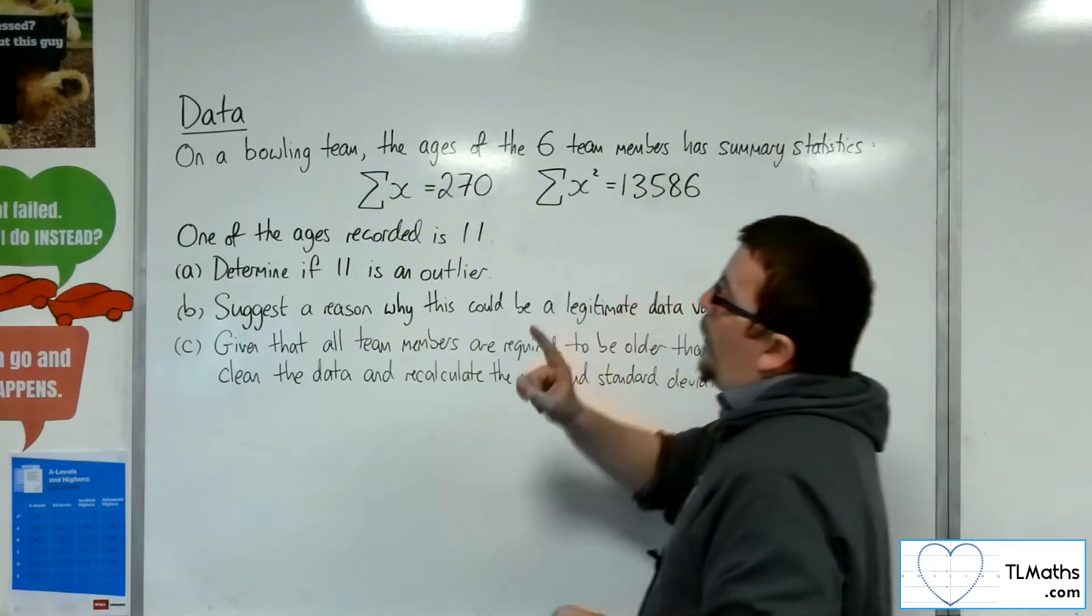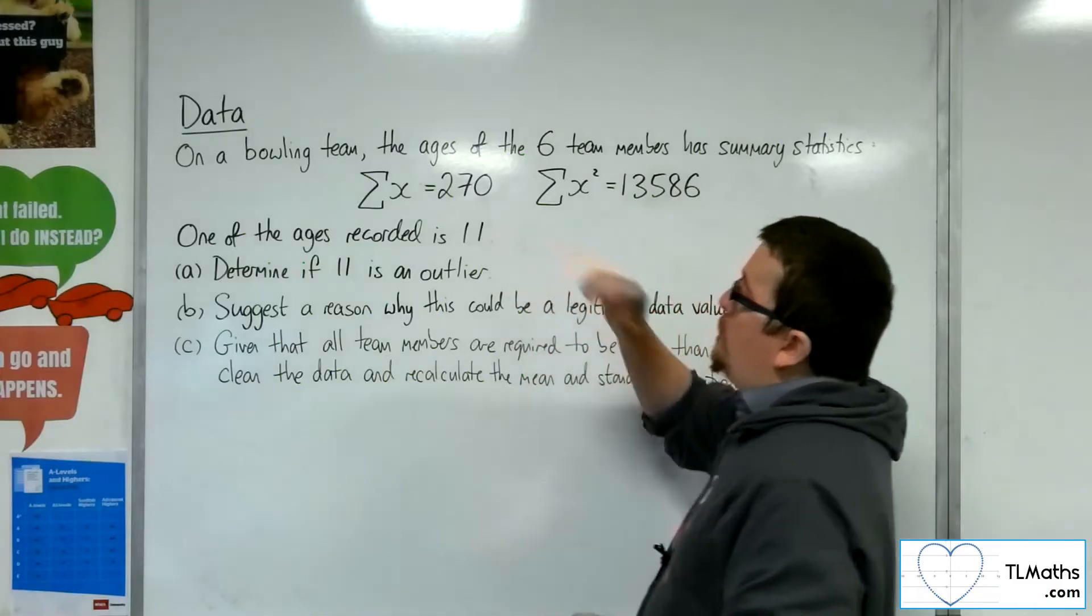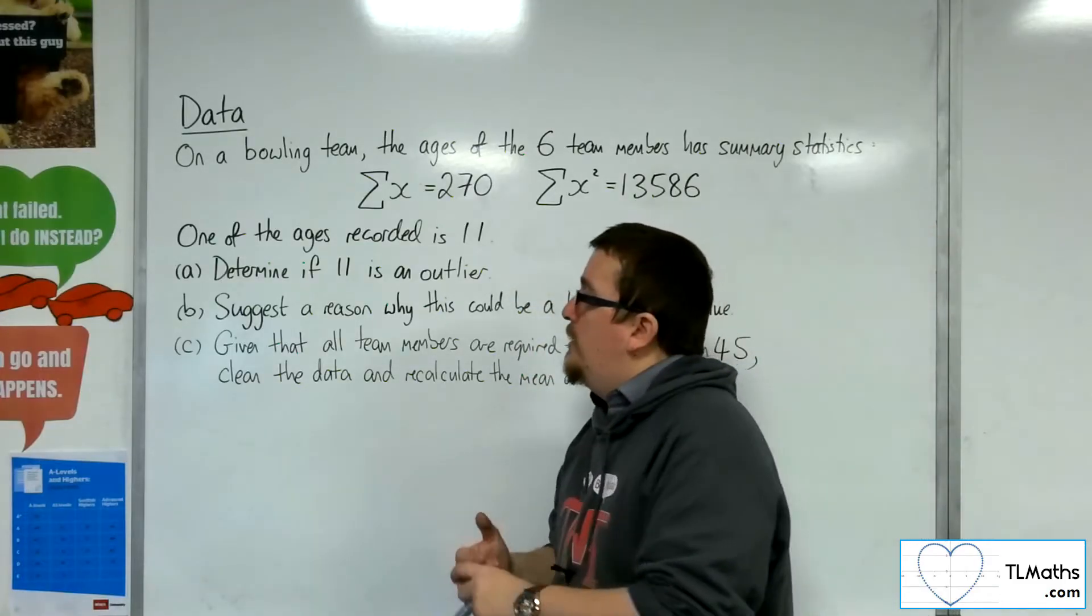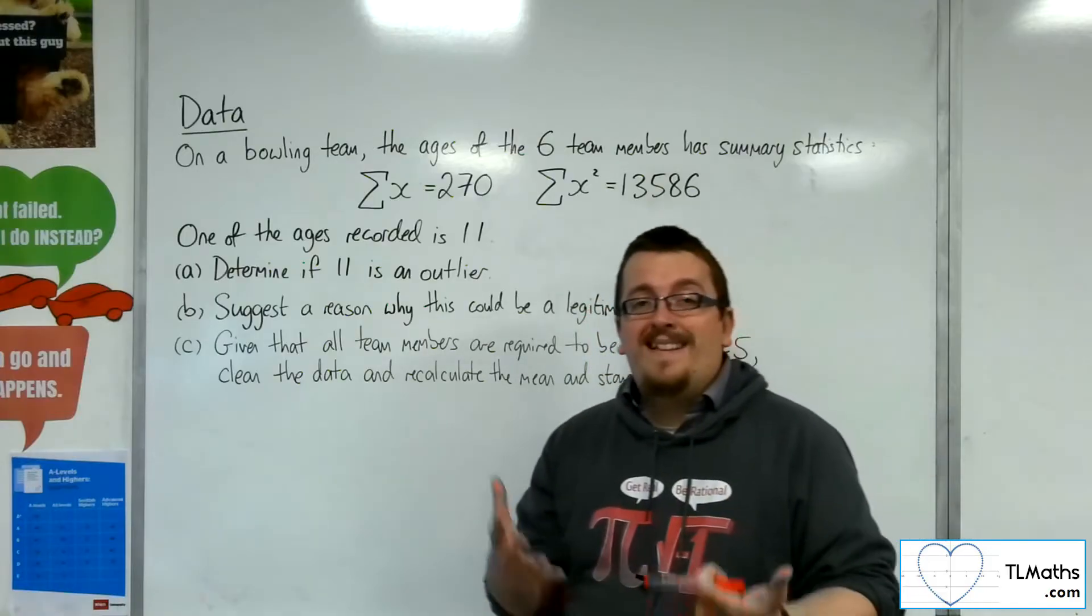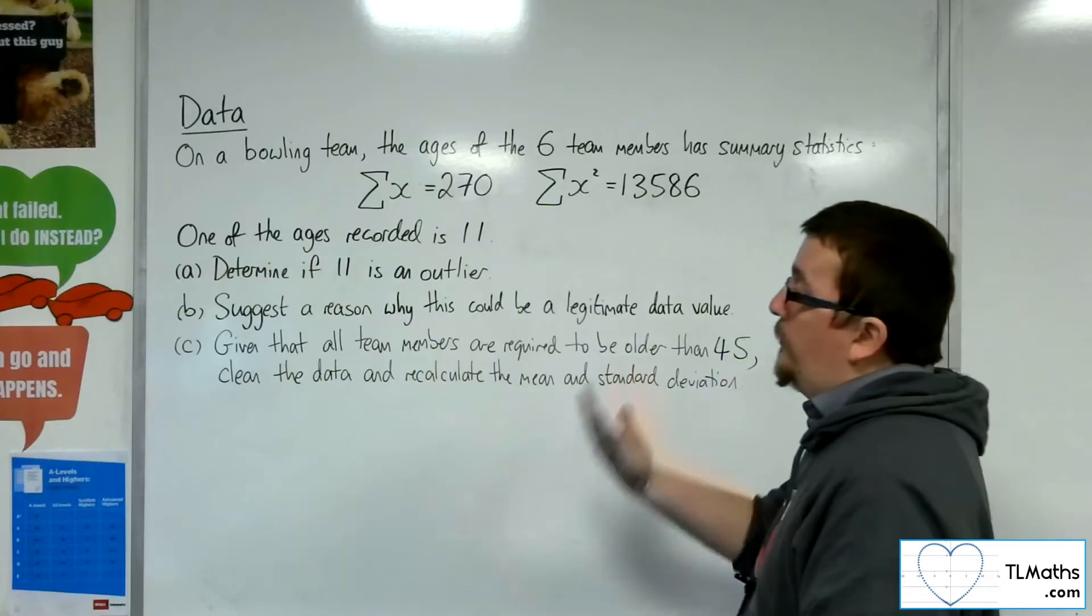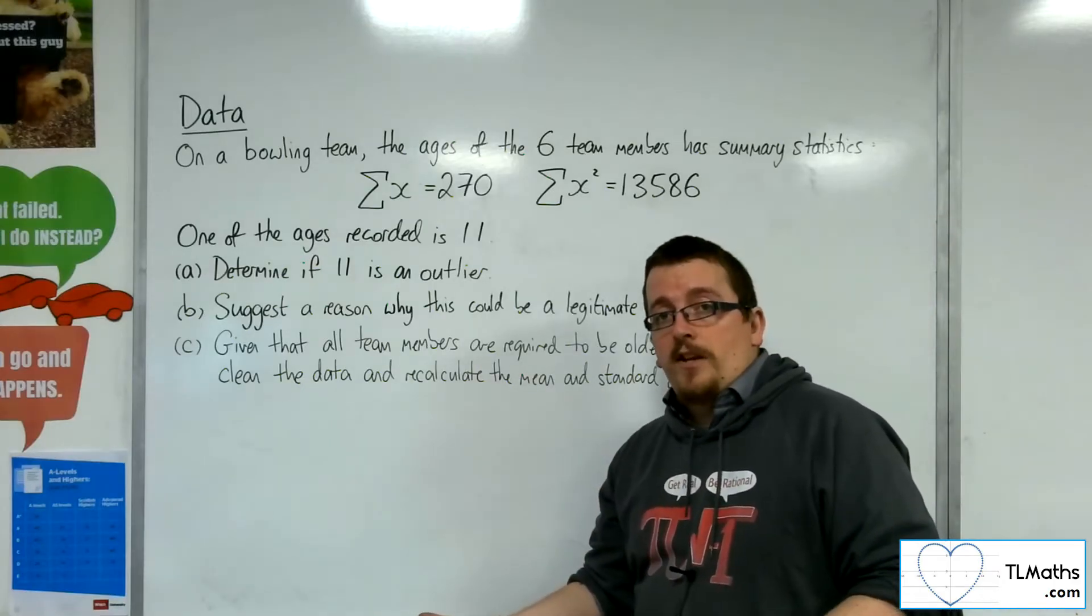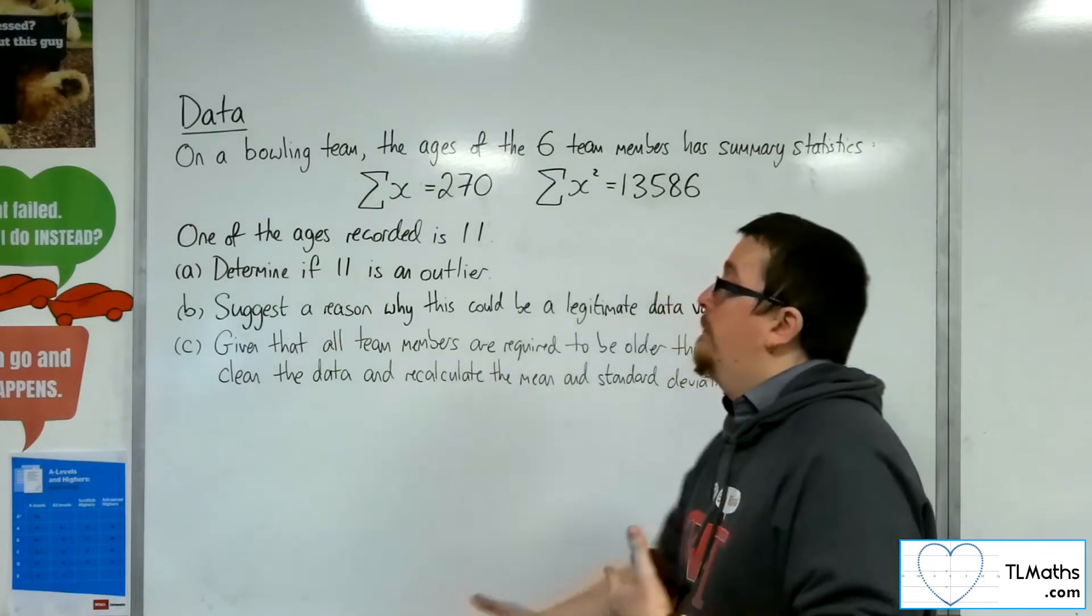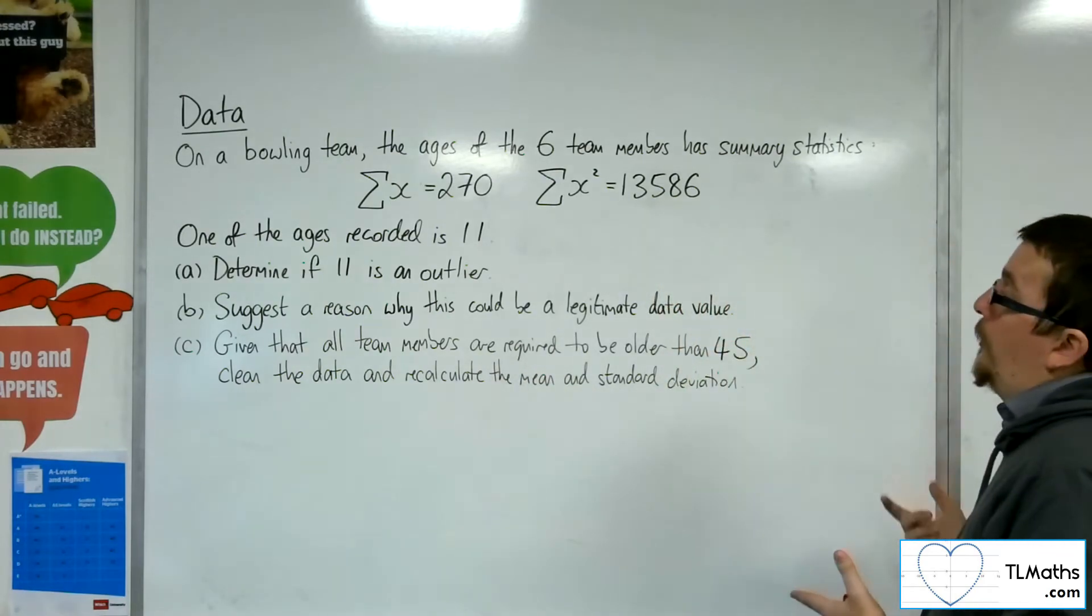One of the ages we know has been recorded as 11. And the first thing we need to do is to determine if 11 is actually an outlier. Now in order to do that, I'm going to find the mean and standard deviation. Mean take away two standard deviations, mean plus two standard deviations to find the upper and lower bounds of it and see if 11 is outside of that.